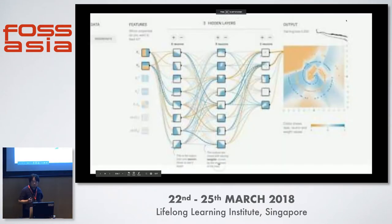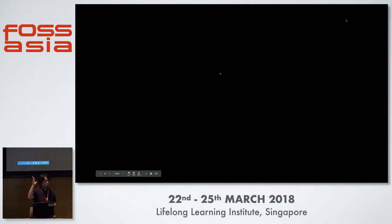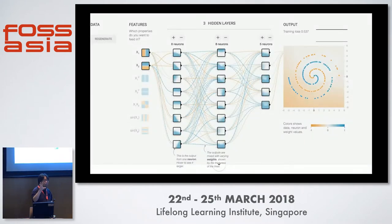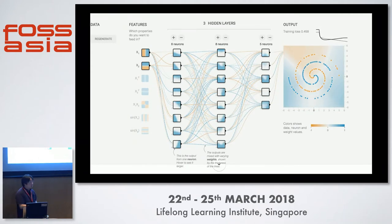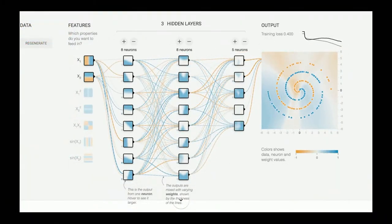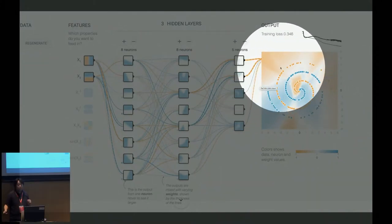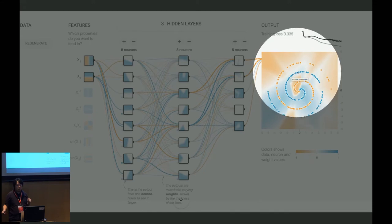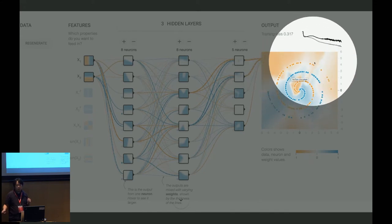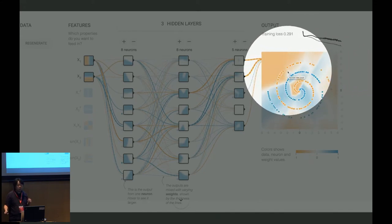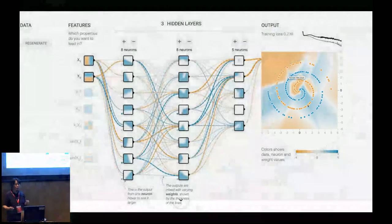This is a demonstration where we have input training data to train the neural network whether a data point should be in an orange or blue spiral. In the middle we have three layers of neural network, and on the right side you can see the output — how the neural network thinks about whether a point is orange or blue. When you start training, the neural network doesn't work at all — it thinks all points in one area must be orange and all in another area must be blue.